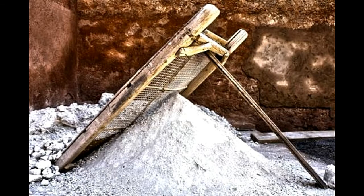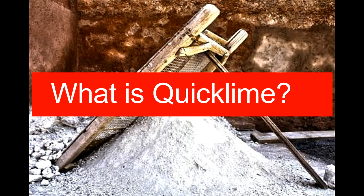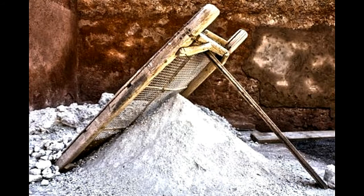Quicklime is a caustic compound known by its chemical name calcium oxide. It appears as a white powder when cold and yellow when heated. Quicklime is produced by heating naturally occurring limestone rock, which contains calcium carbonate. Being highly alkaline in nature, quicklime tends to react with the acidic carbon dioxide present in the atmosphere to again form calcium carbonate, or limestone, from which it was produced in the first place.